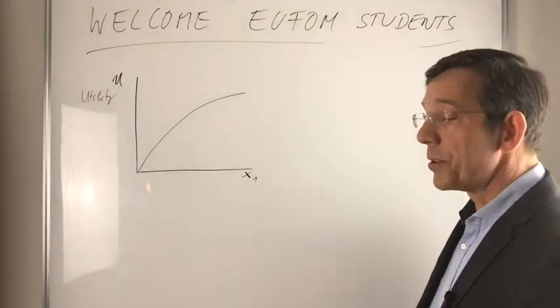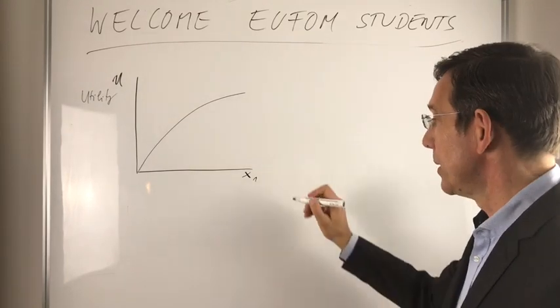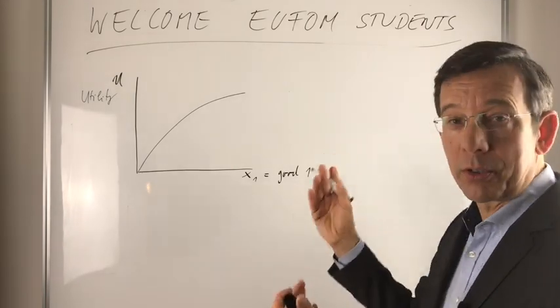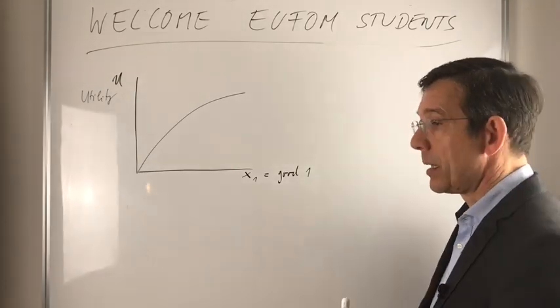And on the horizontal axis you have x1, and x1 is just a good. Let's say it's good one, it doesn't matter which good it is.